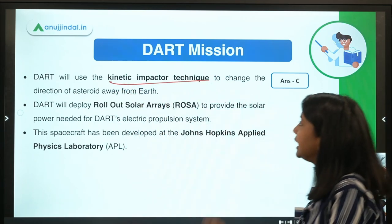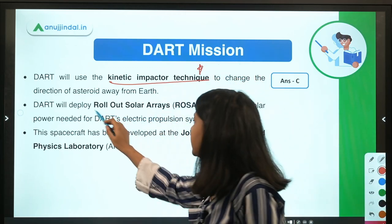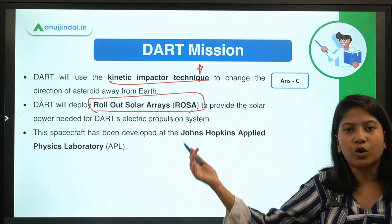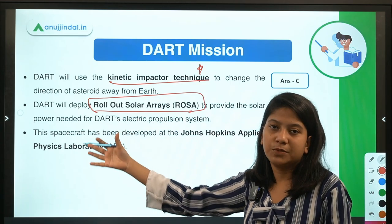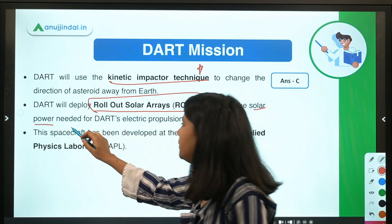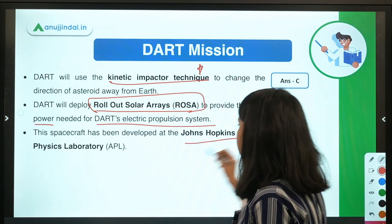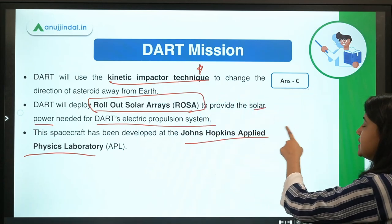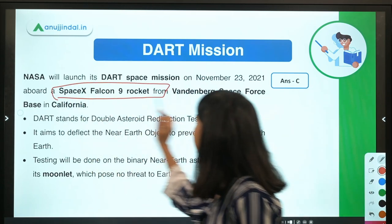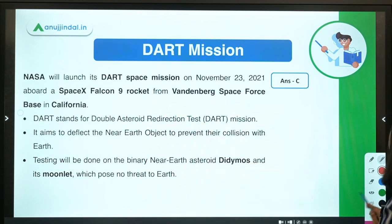The kinetic impactor technique is the name of the deflection technique used by DART. The mission uses ROSA (Roll-Out Solar Array), which acts as the solar power engine for the spacecraft's electric propulsion system. The spacecraft has been developed by the Johns Hopkins Applied Physics Laboratory. It will be launched on a specific rocket — remember the name of the space station and its location.